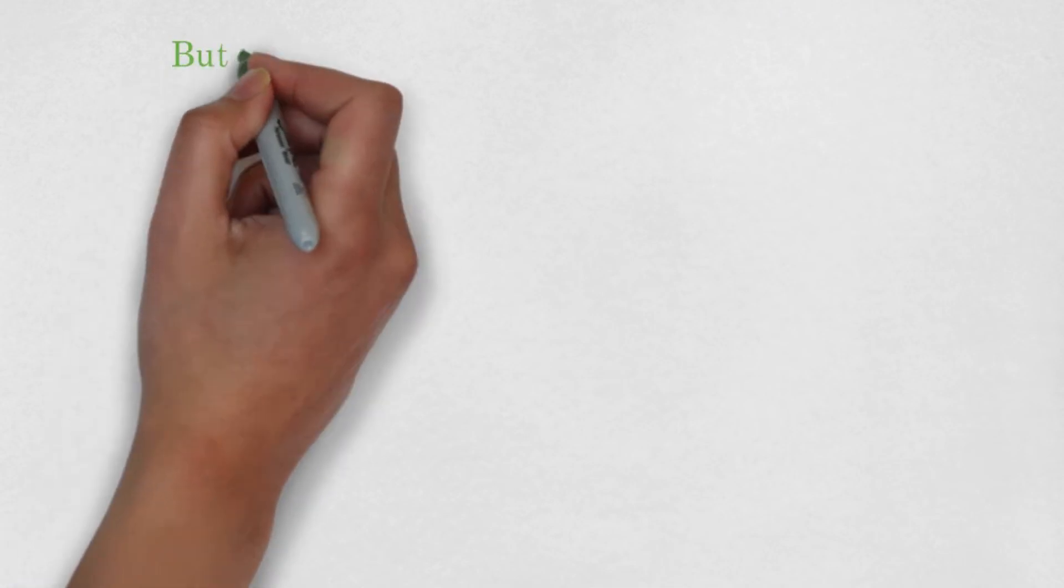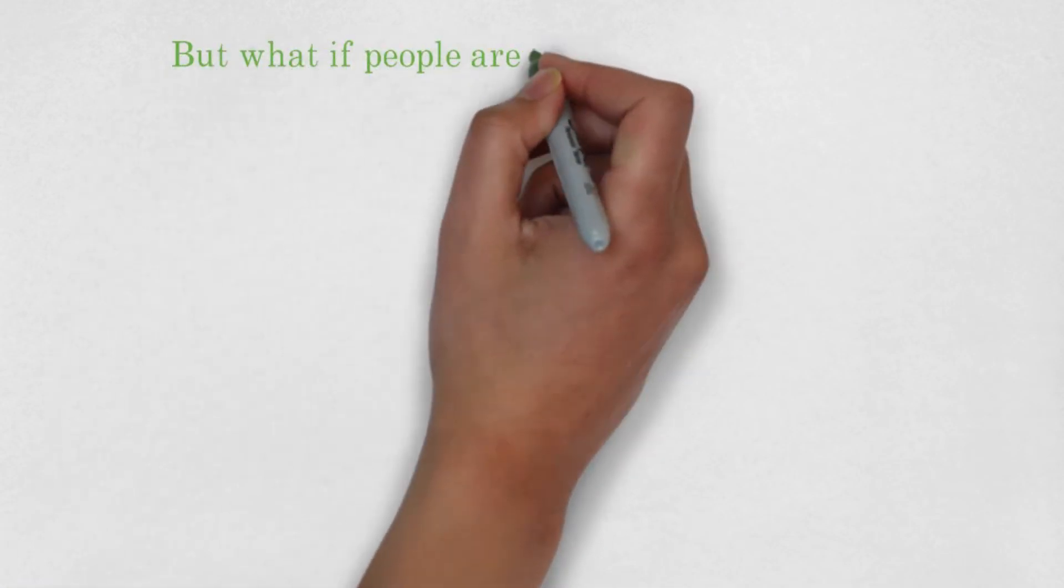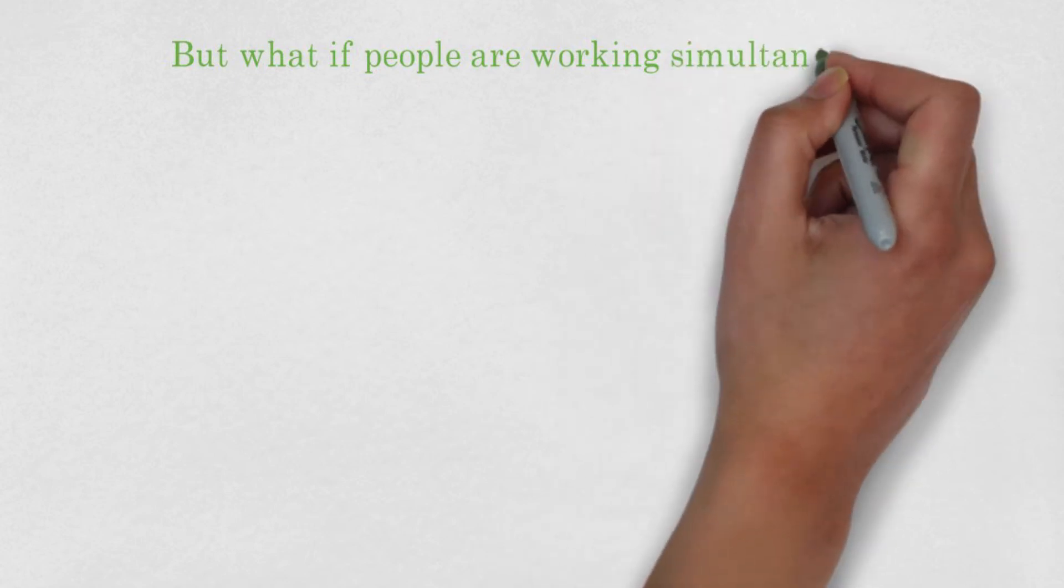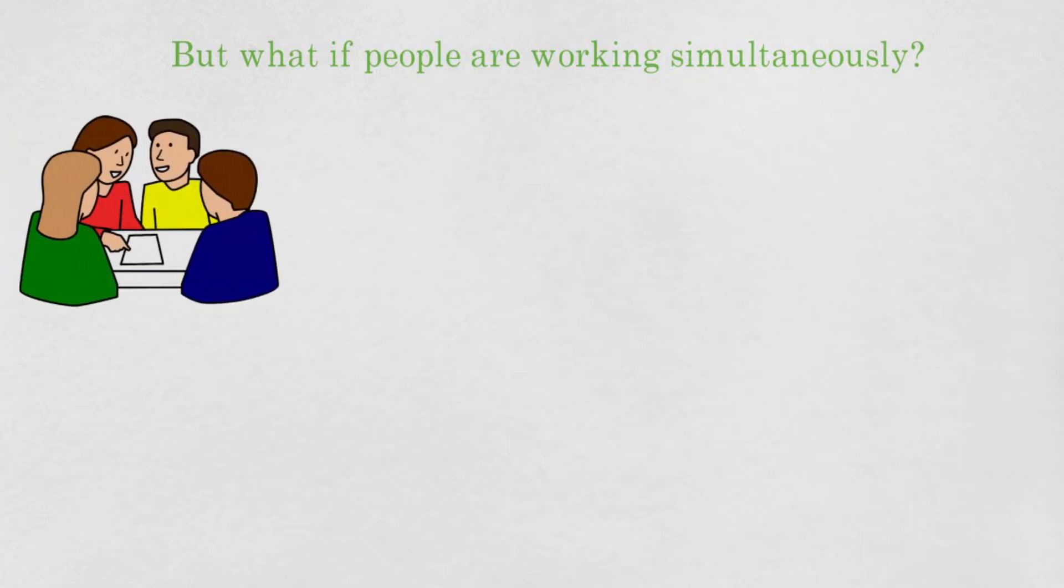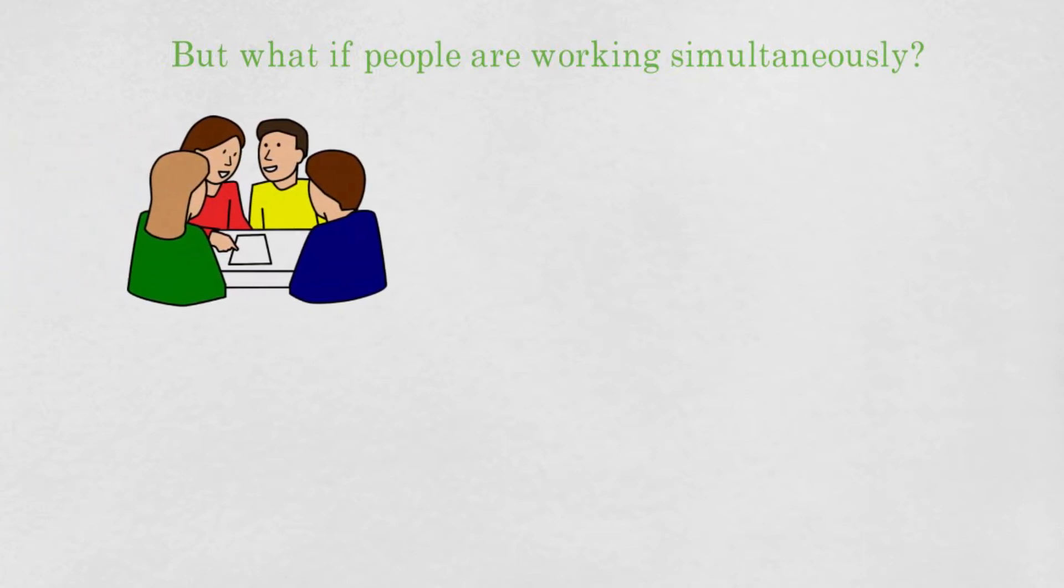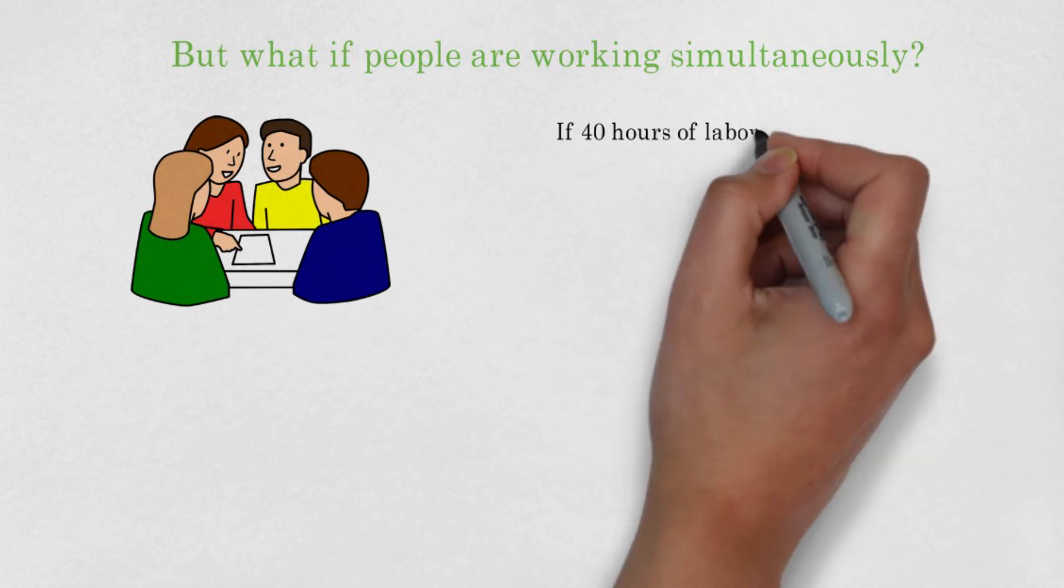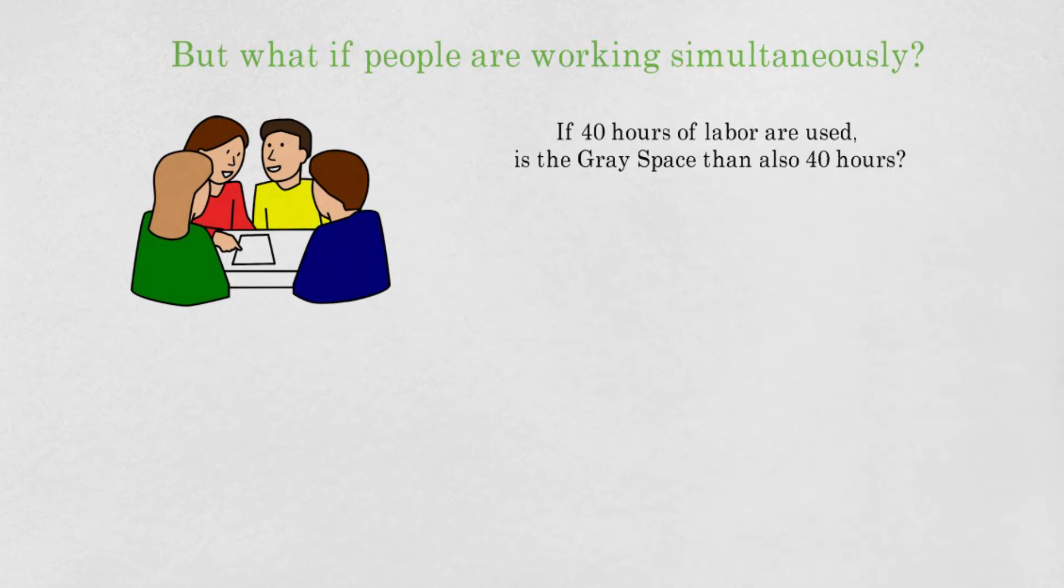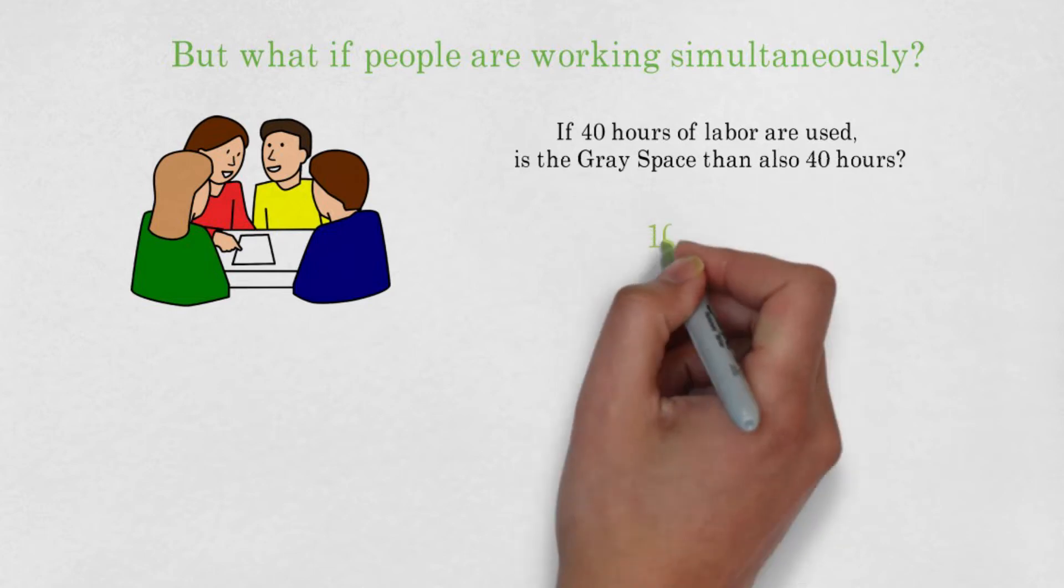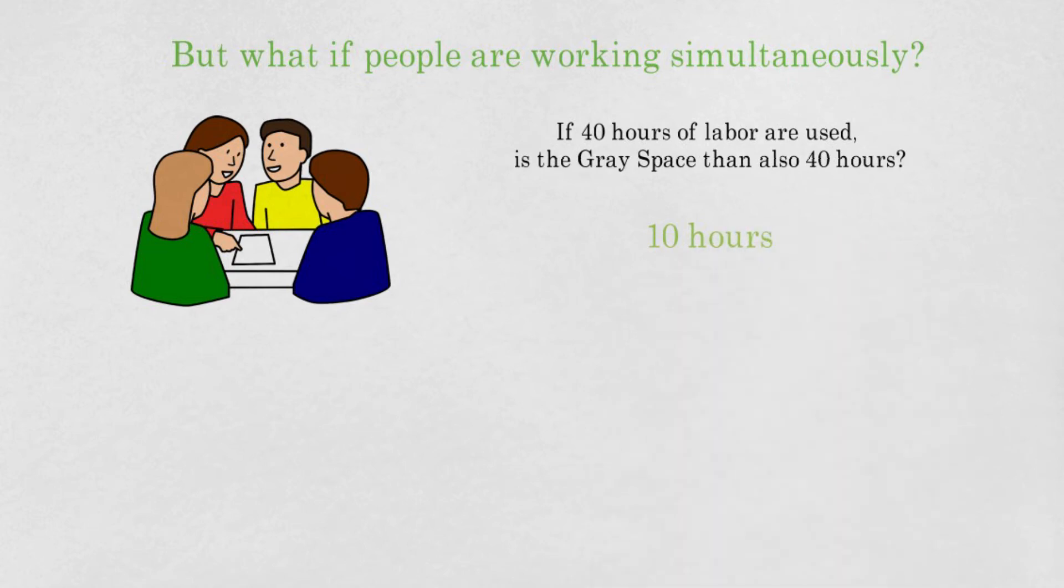Then, as I already said in the introduction, things become more difficult when people are simultaneously involved in a specific operation. For example, when 4 people are working in the assembly department and labor records indicate 40 hours of labor were used. You might think that the gray space would also be 40 hours. However, this is not true. Since people are working simultaneously, the job is done in less hours. To be precise, 10 hours if they would have worked exactly at the same moment.